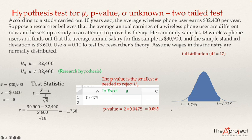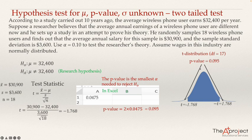The p-value of 0.095 represents the combined area in both tails — the left tail beyond negative 1.768 and the right tail beyond positive 1.768 — which applies to this two-tail test.